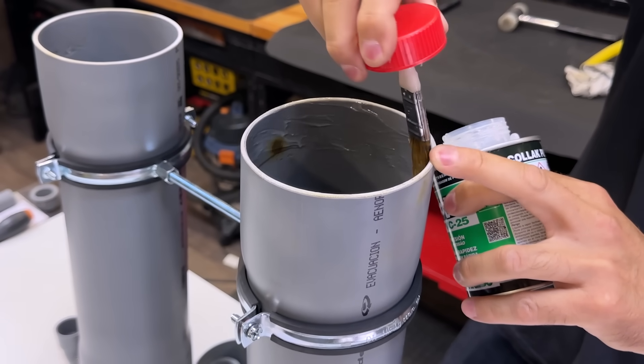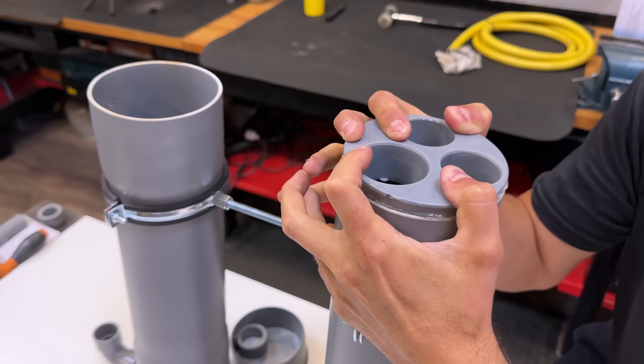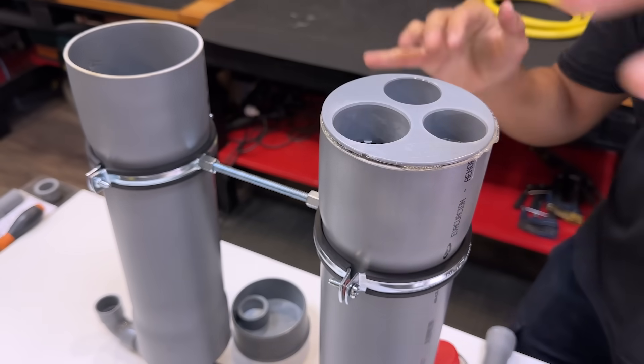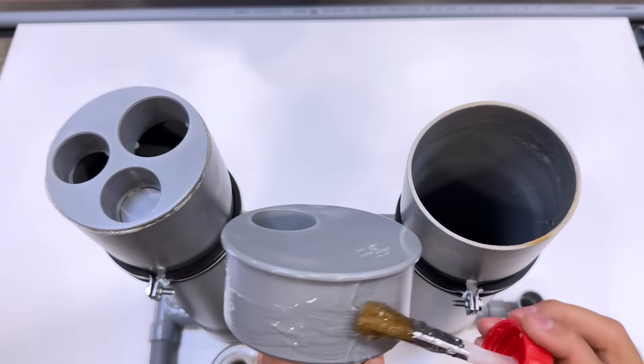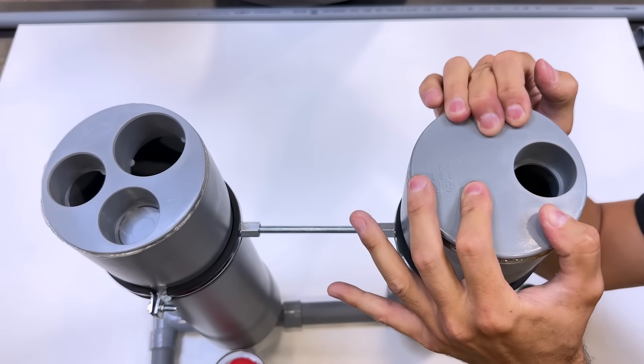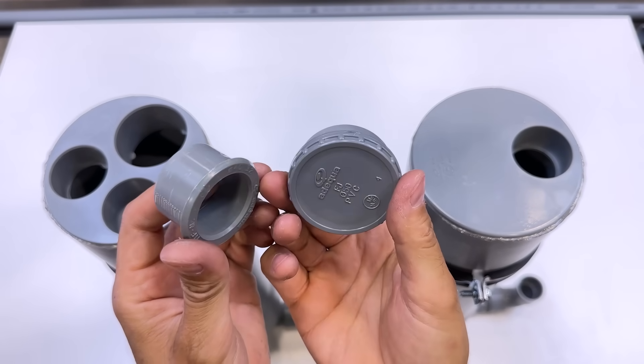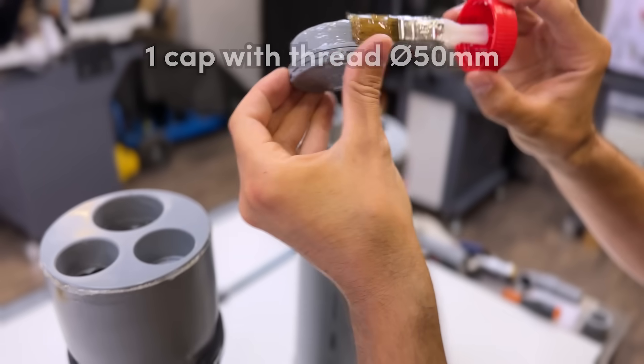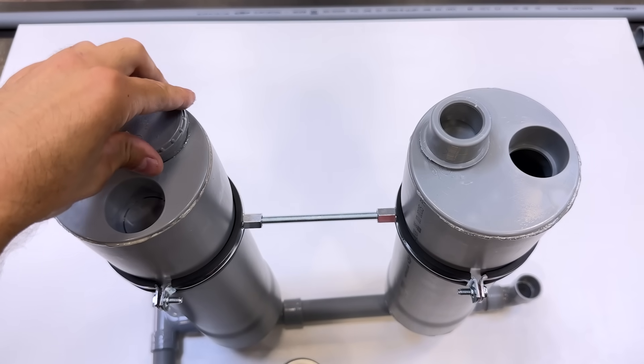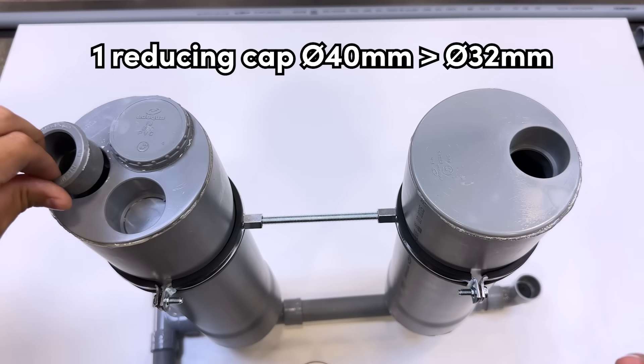We continue gluing these two caps on top. One of them has two holes and the other has only one. Now we will glue these two couplings. One of them is a 50 millimeter diameter threaded plug, and the other is a 40 to 32 millimeter diameter reducer.